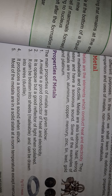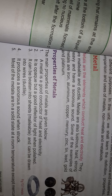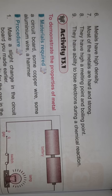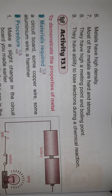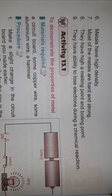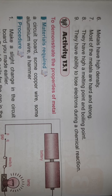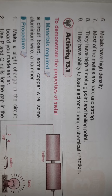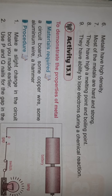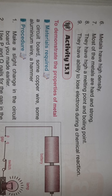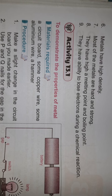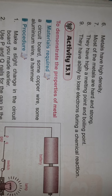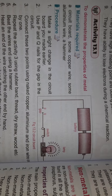Most metals are in a solid state at room temperature, except mercury. Metals have high density. Most metals are hard and strong. They have a high melting and boiling point. They also have the ability to lose electrons during a chemical reaction.